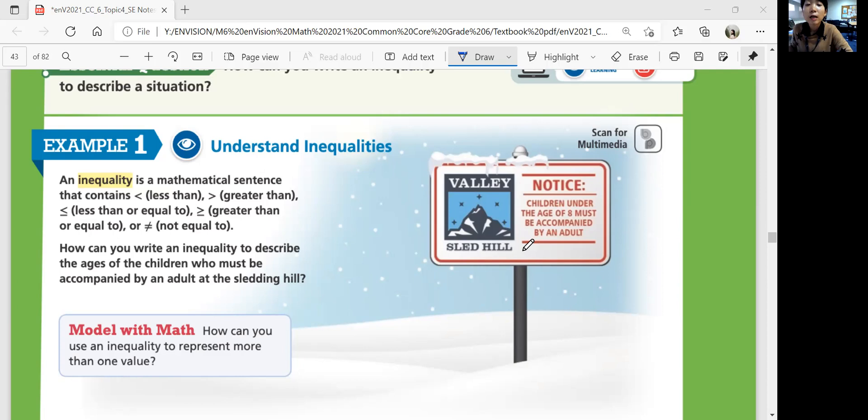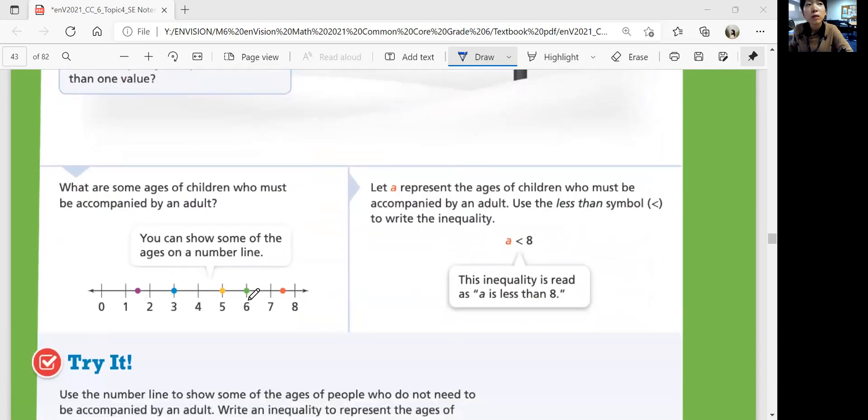Some other ages that you can show on the number line that's less than 8 would be 6, 5, 3, 1.5, right? These are all ages younger than 8. So your inequality should be A, any number less than 8.